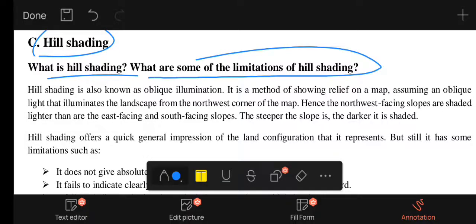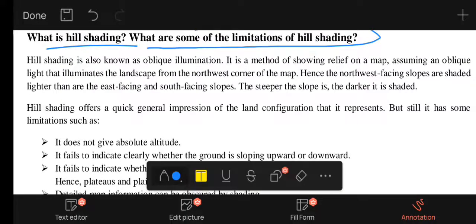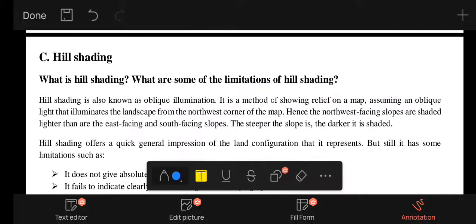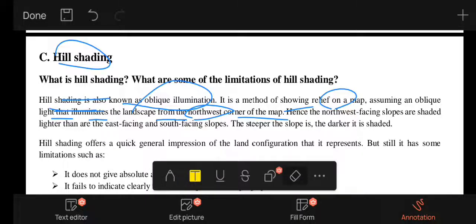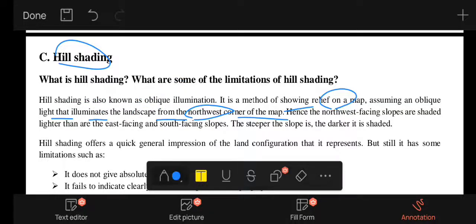Hill shading is also known as oblique illumination. It is a method of showing relief on a map assuming an oblique light that illuminates the landscape from the northwest corner of the map. Northwest facing slopes are left unshaded or lightly shaded.